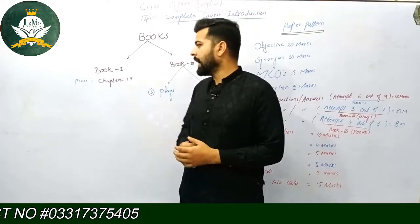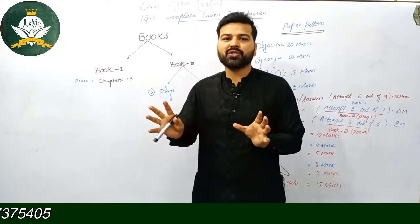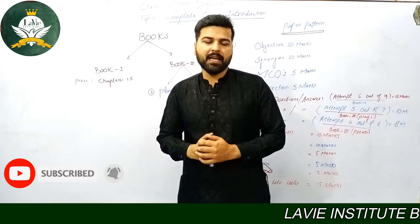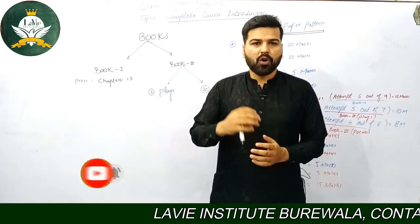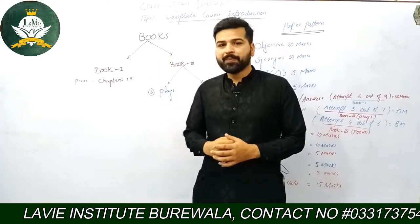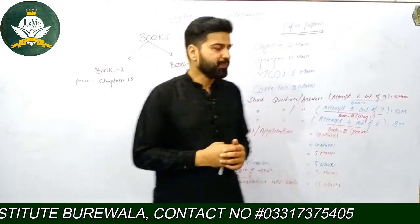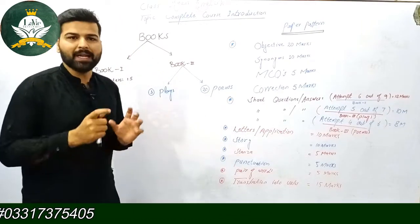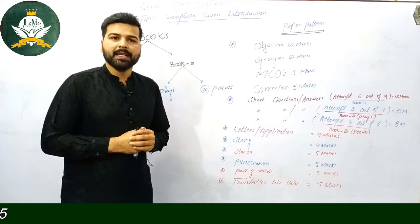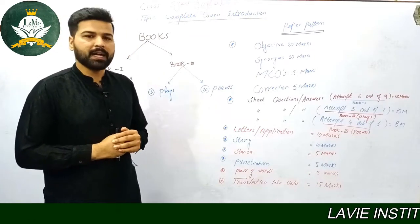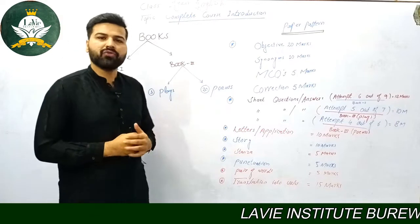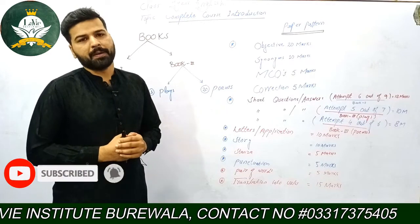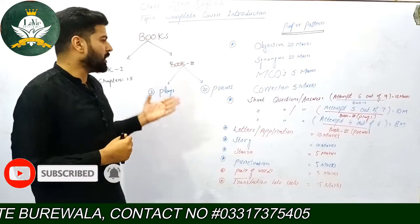Book 1 کے اندر short stories اور prose ہیں، اور اس میں 15 chapters ہیں جنہیں ہم نے پڑھنا ہے۔ اور Book 3 کے اندر دو چیزیں ہیں: number one، Book 3 میں ہمارے پاس one act plays ہیں جو کہ تین ہیں، ہم نے انہیں تیار کرنا ہے۔ اور جو دوسری چیز Book 3 کے اندر ہے وہ ہے poems — total 20 poems ہیں اور ہم نے ان کی preparation کرنی ہے۔